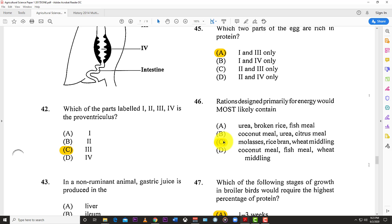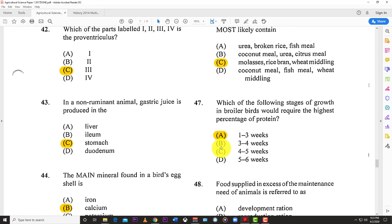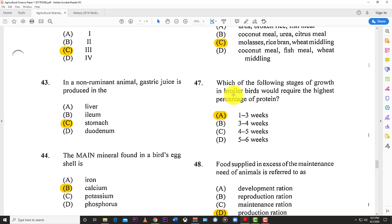Number forty-five: In this diagram, which parts of the egg are rich in protein? The answer is A. One, that's the egg white, and three, which is pointing at the egg yolk. The egg white and egg yolk are rich in protein.